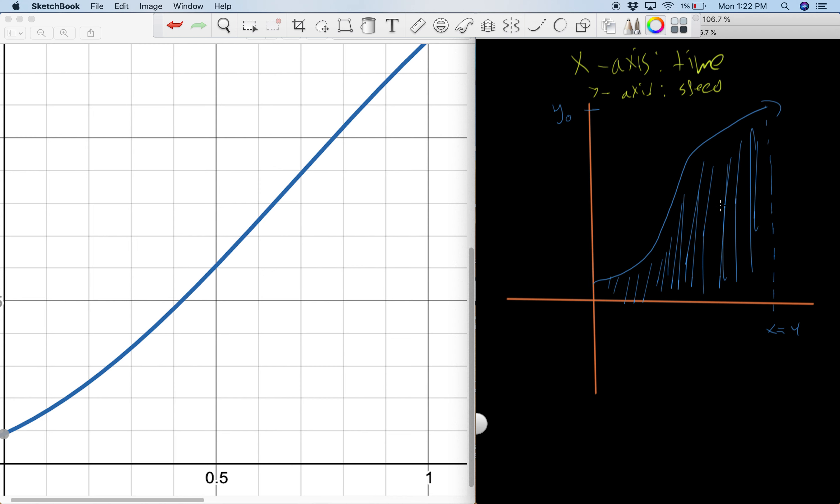This gives us the displacement of the person that has ran as a function of time, and that is the significance of an integral. Once we actually understand how to calculate the integral, this will become much more concrete.